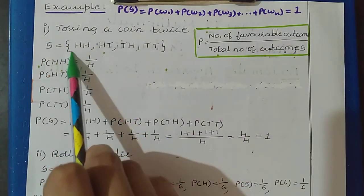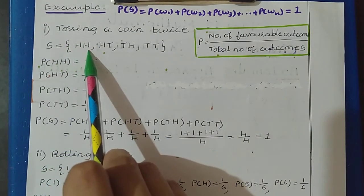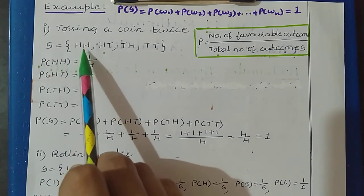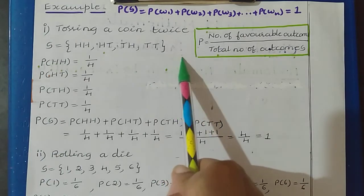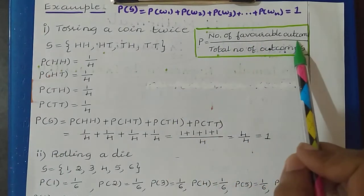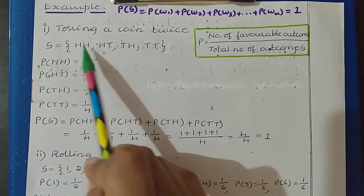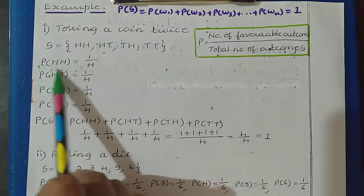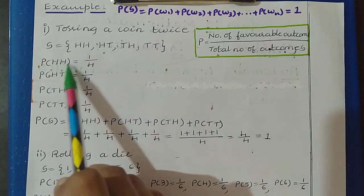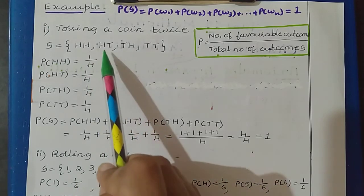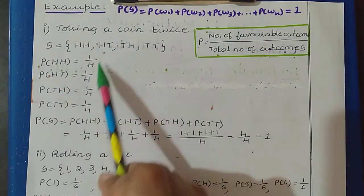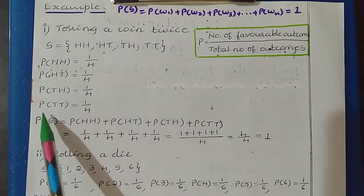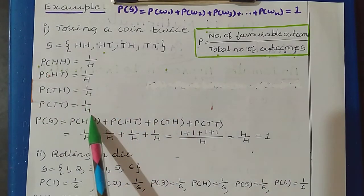The probability of HH — the chance of occurrence of this particular outcome is 1. So number of favorable outcomes is 1 divided by total outcomes, which are 4. So probability of HH is 1/4. Similarly, probability of HT is 1/4, probability of TH is 1/4, and probability of TT is 1/4.